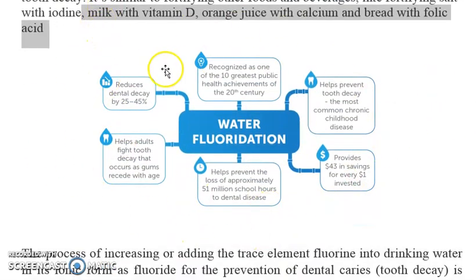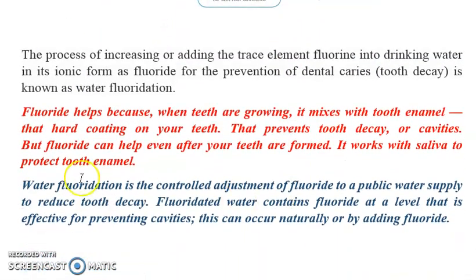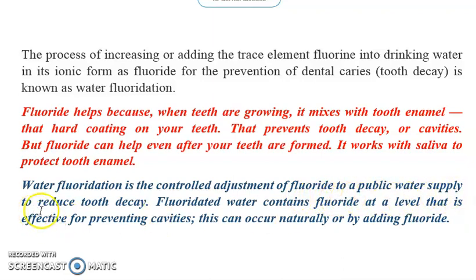Fluoride helps because when teeth are growing it mixes with the tooth enamel — that hard coating on the teeth — and that prevents tooth decay or cavities. Fluoride can help even after teeth are formed, as it works with saliva to protect the tooth enamel. Water fluoridation is the controlled adjustment of fluoride in a public water supply to reduce tooth decay. Fluoridated water contains fluoride at a level effective for preventing cavities, which can occur naturally or be added artificially.